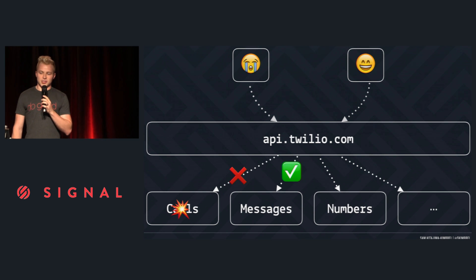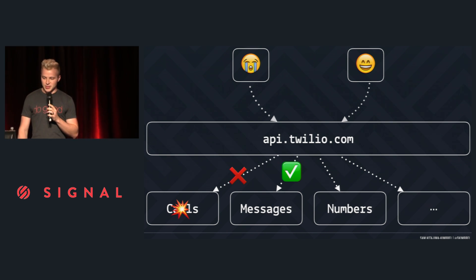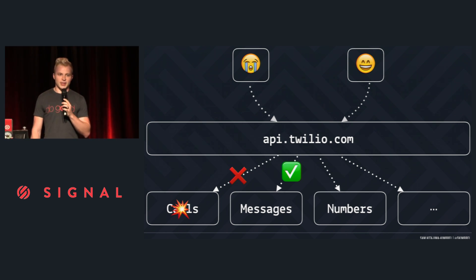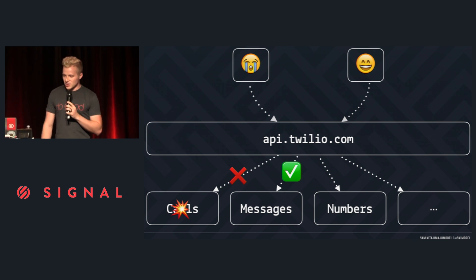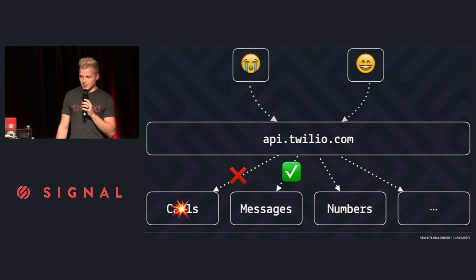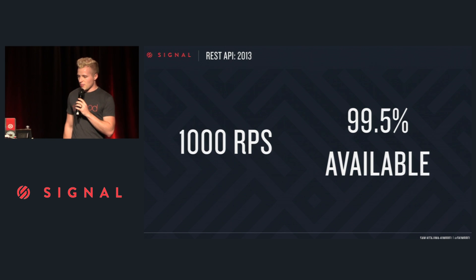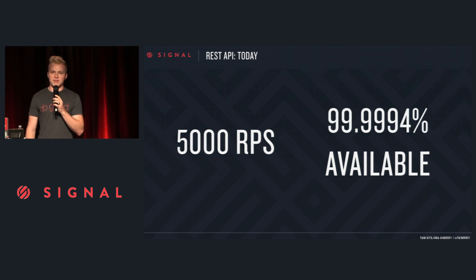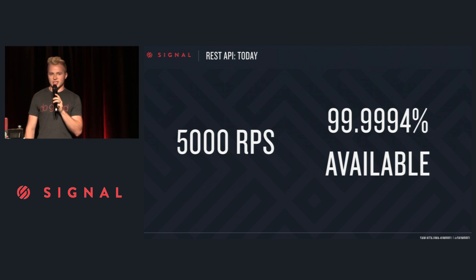It lets us provide fine-grained status updates to you, because we don't want to cry wolf and say the entire API is broken when it's just one resource — something you might not even be using. You'd stop paying attention to our alerts. And it lets the product teams that we expose to the API take ownership of their own systems. So with that definition in mind, let's put some numbers up. Here's 2013: peak traffic to the API was 1,000 requests per second, and we had 99.5% availability. Things have changed a little bit — here's today: five times the traffic, 5,000 requests per second at peak. And I'm pleased to report that at the end of 2015, for the year, we hit 99.9994% uptime.